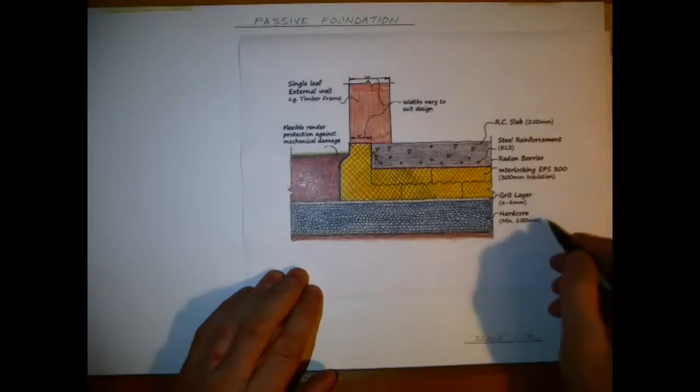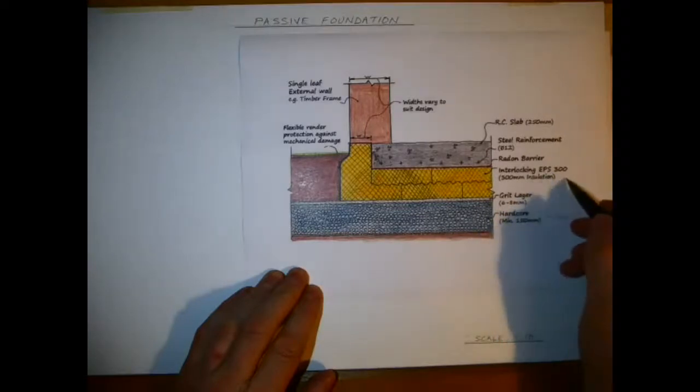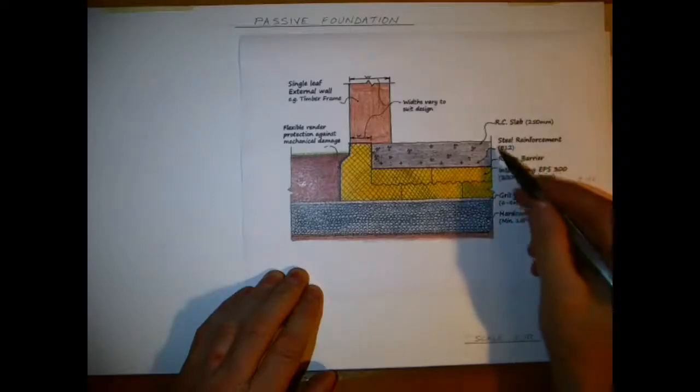You can see here it's got a layer of hardcore, minimum 150 millimeters up to 300, which is what I'm going to be using here, and a grit layer or a blinding layer of 68 and interlocking EPS of 300 to 150 millimeters.